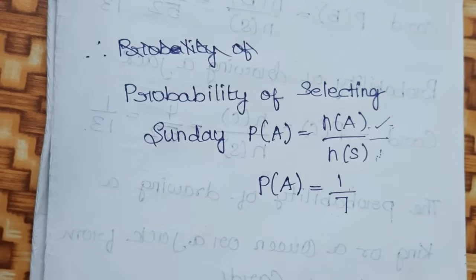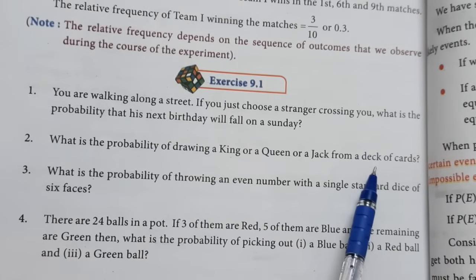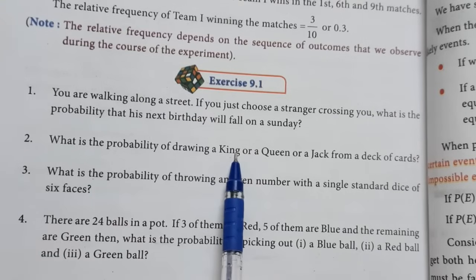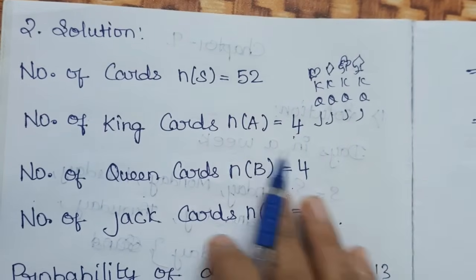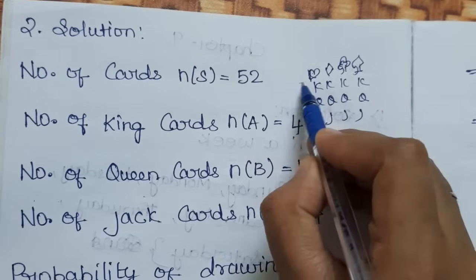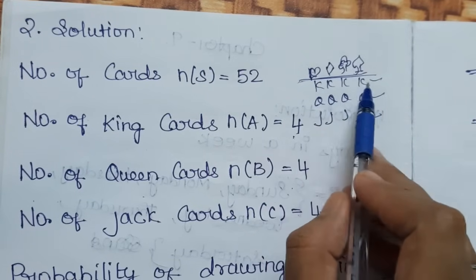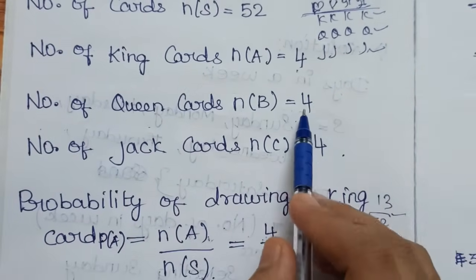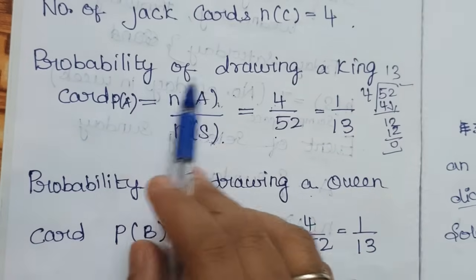Second question: what is the probability of drawing a king or queen or jack from a deck of cards? In a full pack of cards, King, Queen, and Jack each appear in 4 different suits. So the number of King cards n of A is 4, number of Queen cards is 4, and number of Jack cards is 4. We use the addition rule: probability equals n of A by n of S.